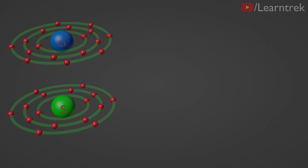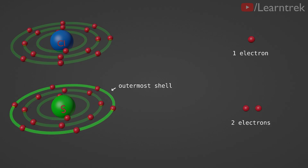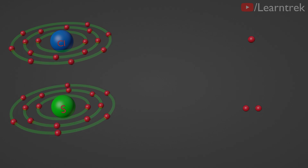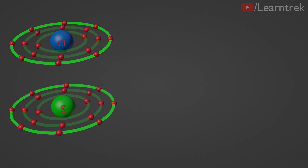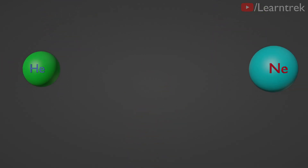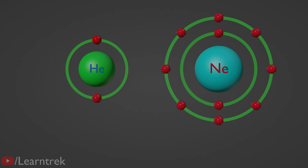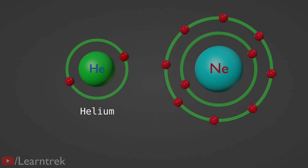For example, chlorine needs only one electron to complete its outermost shell, while sulfur needs two electrons. In comparison with sulfur, chlorine has more tendency to attract electrons and also more tendency to attain a completely filled outermost shell. That's why chlorine is more reactive than sulfur. The elements that have completely filled outermost shell are non-reactive and stable, for example, noble gases like helium and neon.